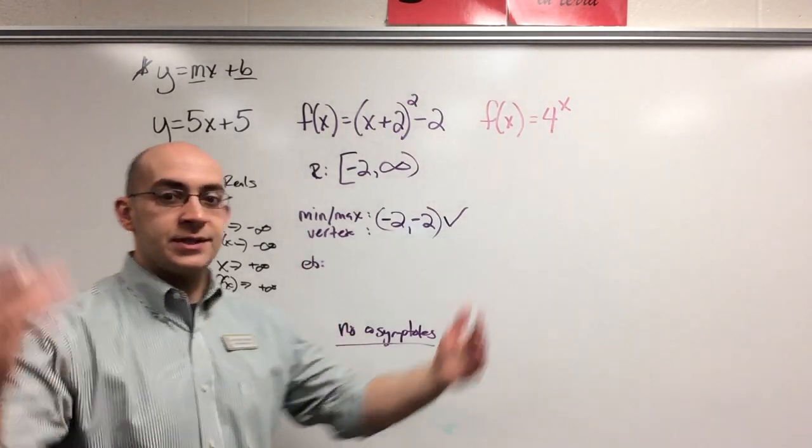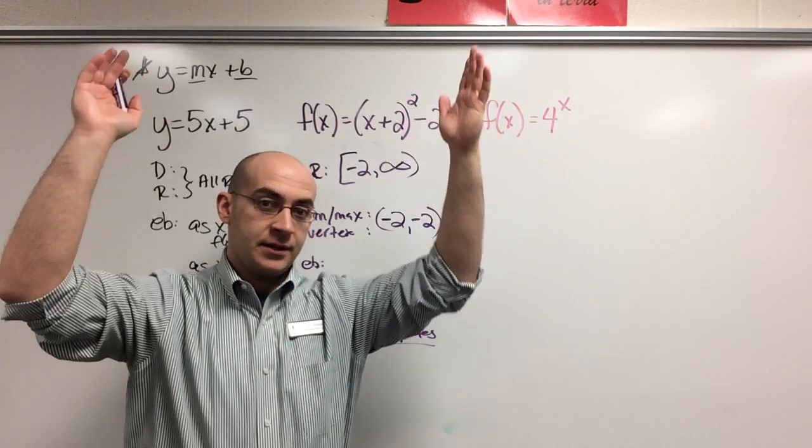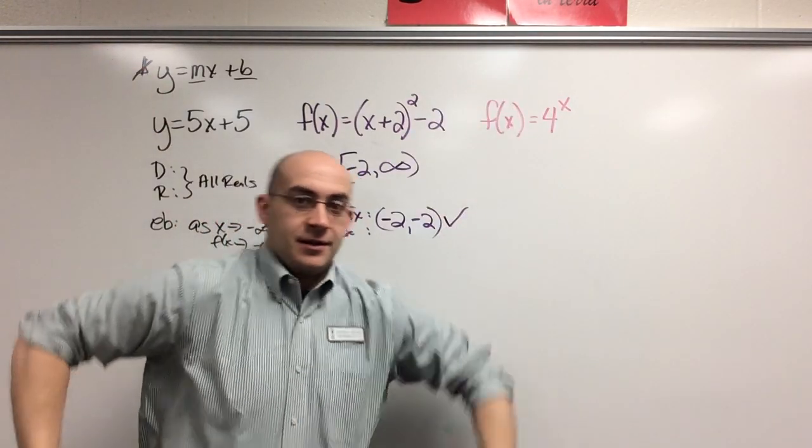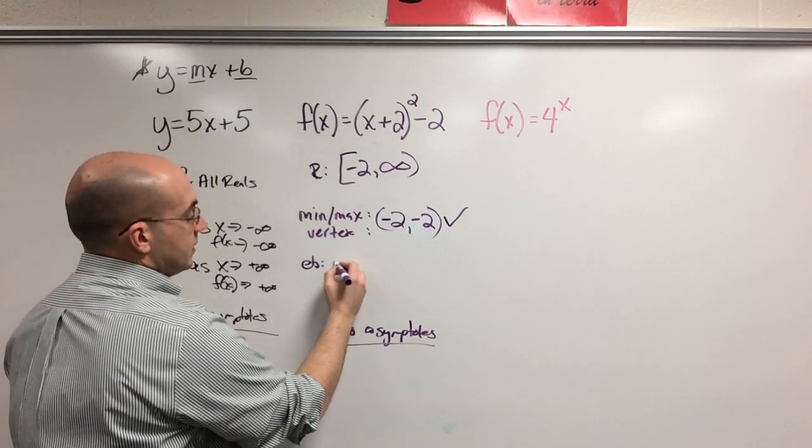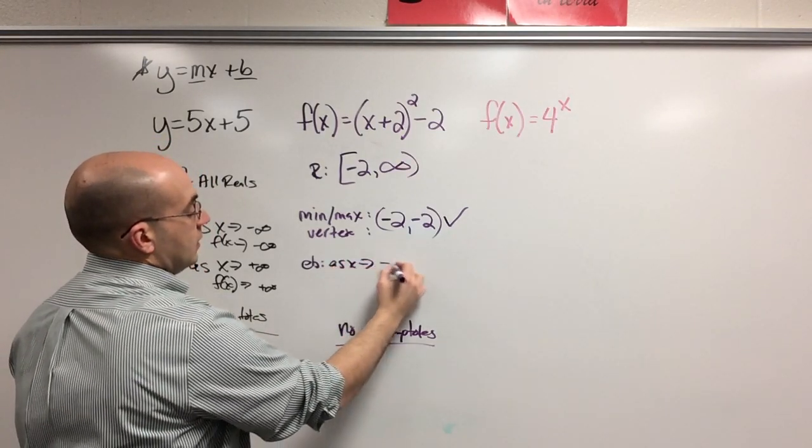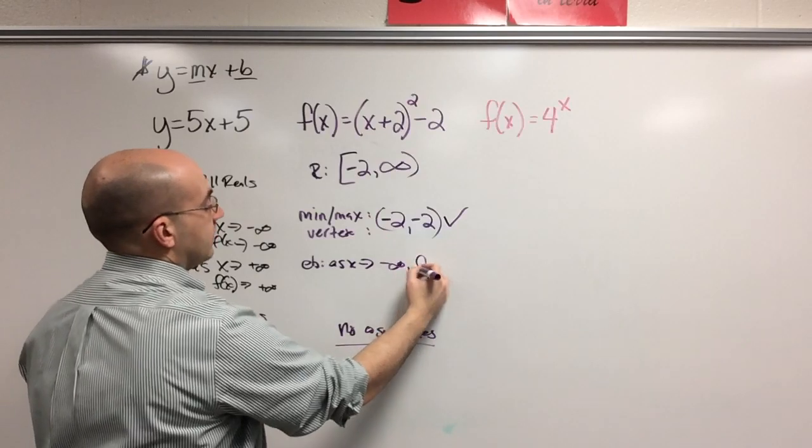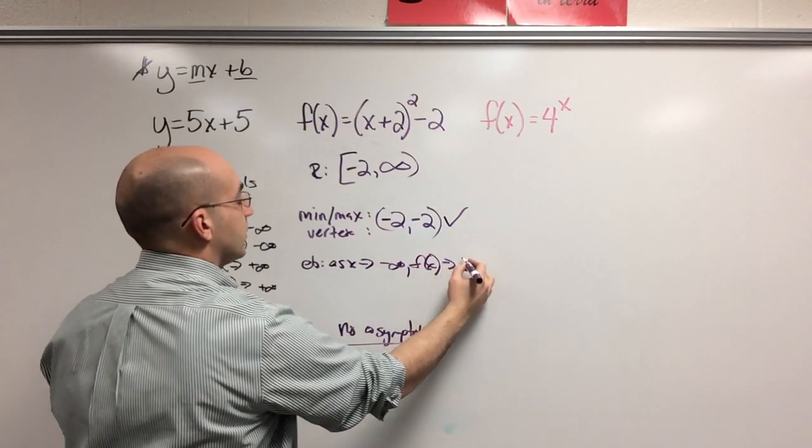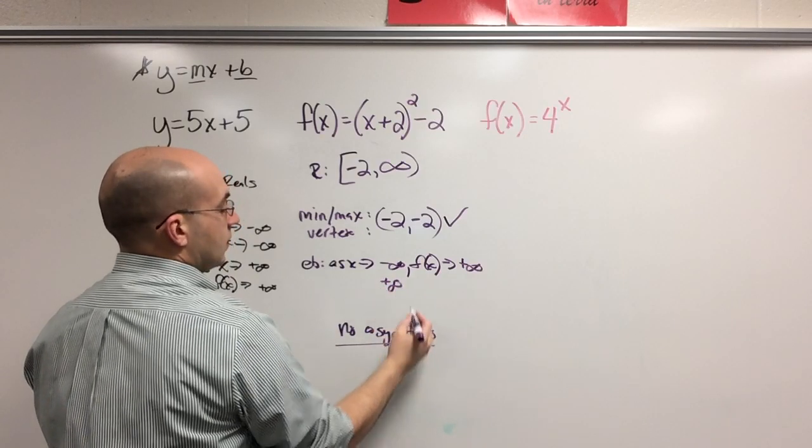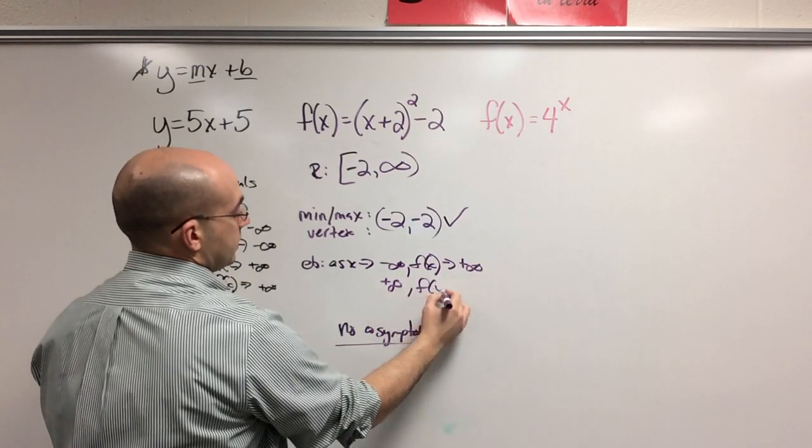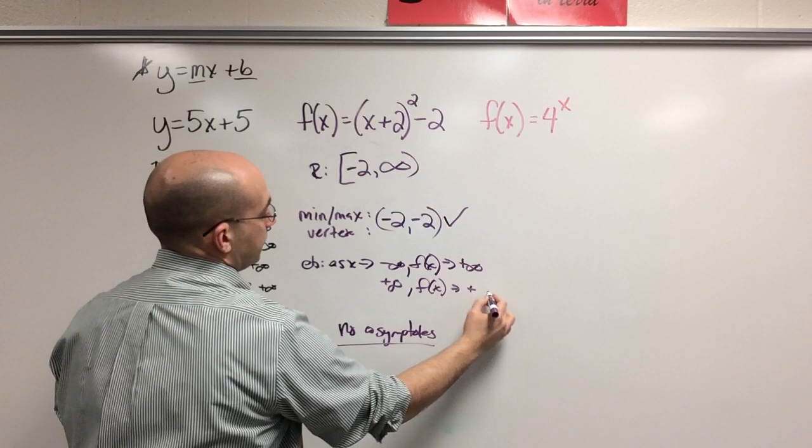End behavior is a little different here too, because quadratics always start and end at the same spot. So it starts here, ends here, starts here, ends here, starts here, ends here. That's a weird dance. So the end behavior is as x approaches negative infinity for this function, f of x approaches positive infinity, and same goes true for the other side. Positive infinity approaches positive infinity.